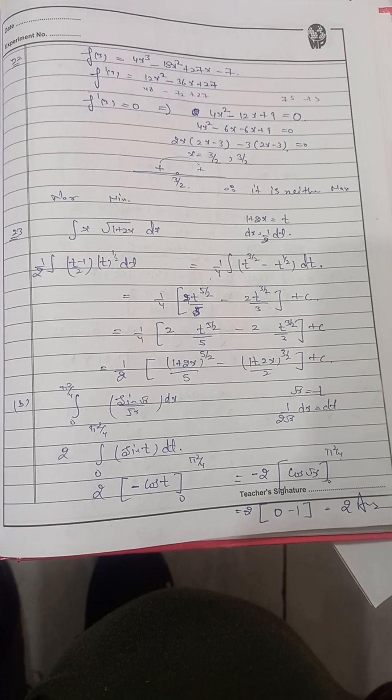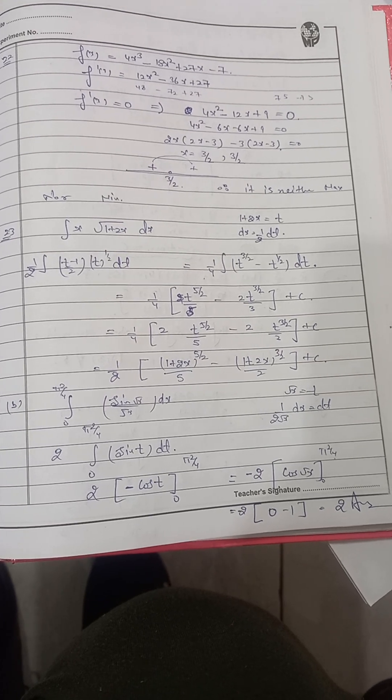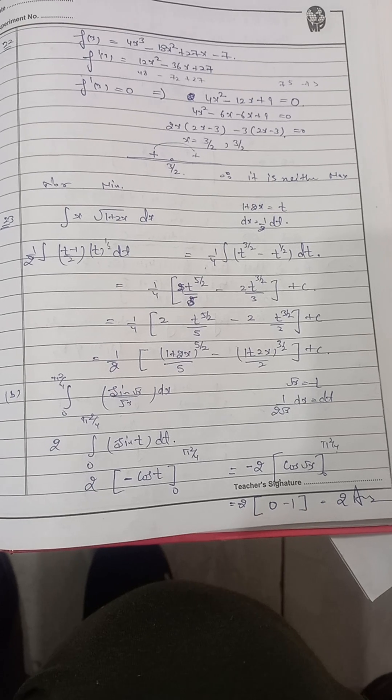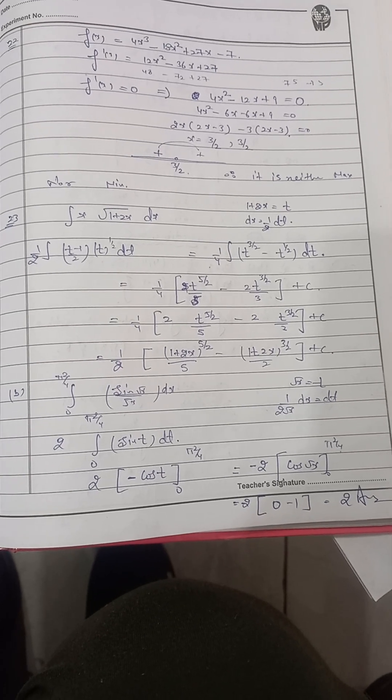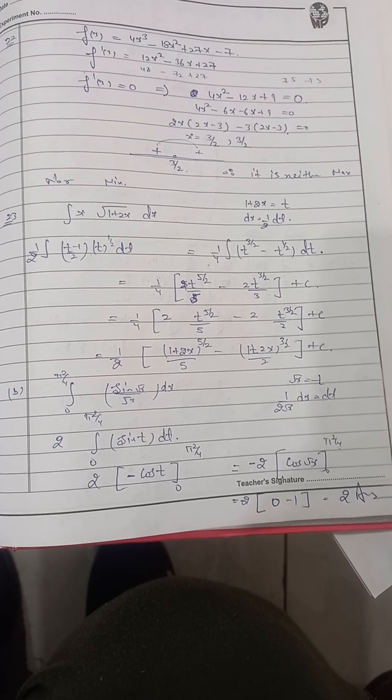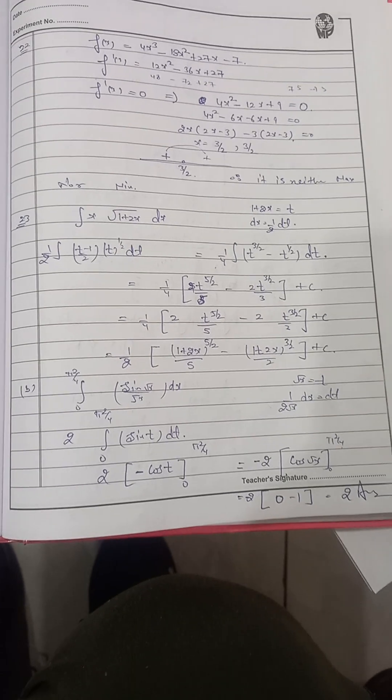So in this question you may see that root x equals to t, we use to substitute this value, then we differentiate 1 by 2 root x dx dt and afterwards you may get the solution and its accurate answer is 2 only.